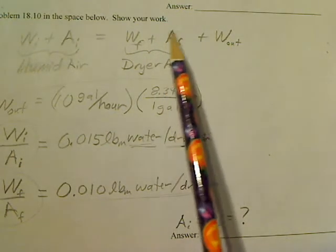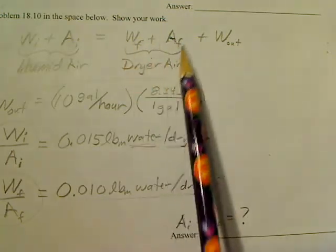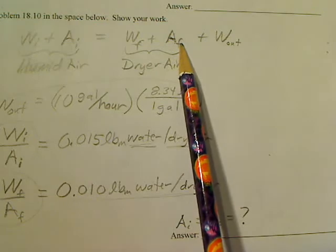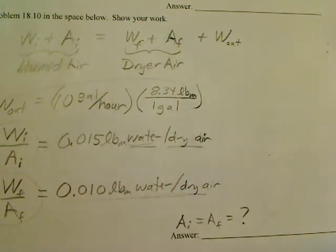So the A sub F here is completely dry air with a little bit of moisture, so this over here is a little bit drier than this over here. But the A initial and A final, which are equal to each other, is just dry air, completely dry.